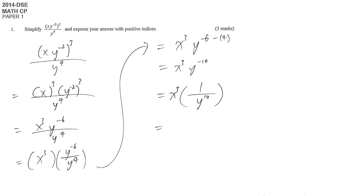And then finally, you combine them. This is numerator times numerator. So we have x power of 3 over y power of 10. That's the final answer.